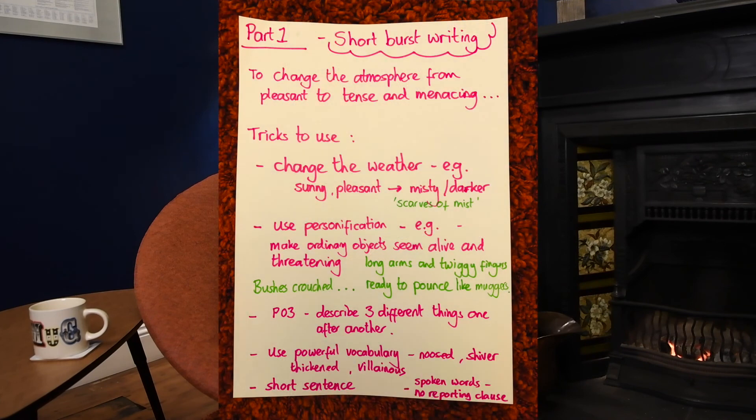For your short burst writing, I'd like you to think about how you could change a pleasant scene into something unpleasant by using those tricks. You should see the sheet in front of you — I've summarised those things for you: the change in the weather, personification, maybe using a power of three, the powerful vocabulary, a short sentence, and maybe some spoken word to hint at somebody or something menacing hanging around. I'd love to see some of this writing and I hope you've enjoyed this video and found it useful for The Lost Happy Endings by Carol Ann Duffy. See you next time.